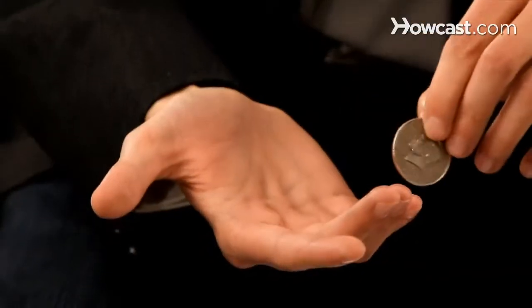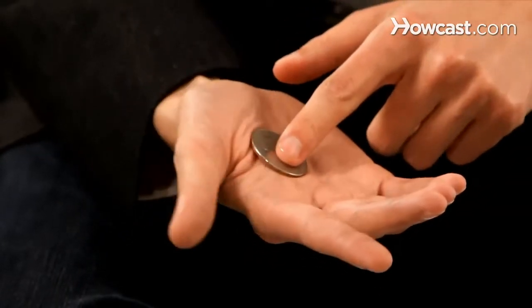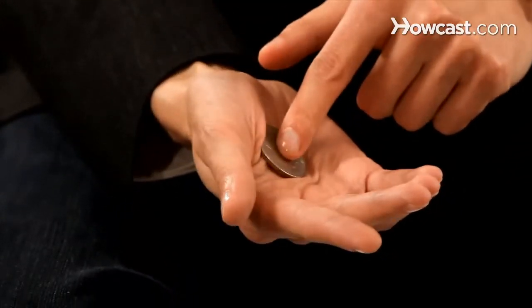It works by a contraction of the muscles in your right hand, or your left hand if you're a left-hander. The coin is placed at the base of the hand. The muscles are then contracted when you bring your thumb a little closer to the forefinger.